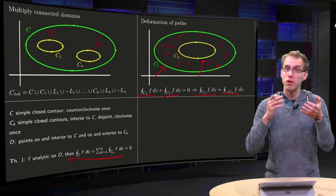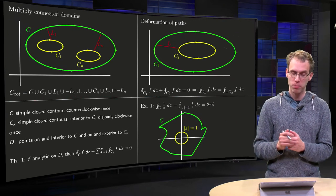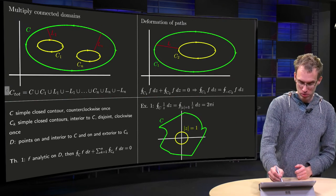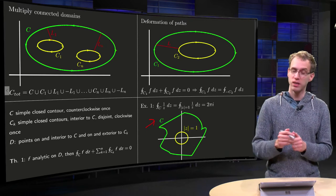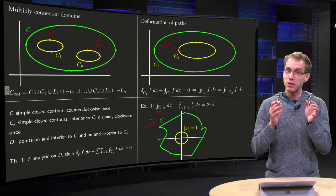You can take a more convenient contour to compute your contour integral. As we see in this example, we have a horrible contour c, and a function f of z equals 1 over z, which is analytic everywhere except at the origin.